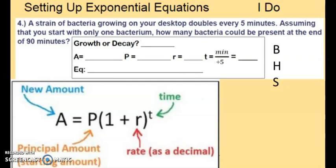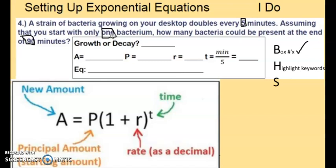B stands for box the numbers. So we have 5, 1, and 90. So we can check that one off. The H stands for highlight key words. So let's see what to highlight. Which key words?